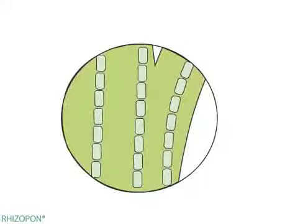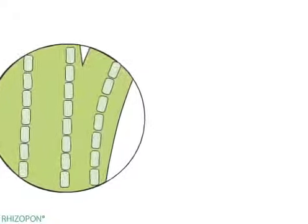The auxins move from cell to cell by polar transport. Polar transport takes place in the xylem, phloem, and other transport vessels in the shoots and stems.